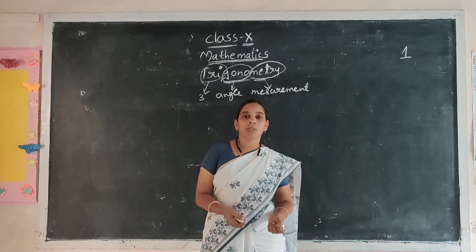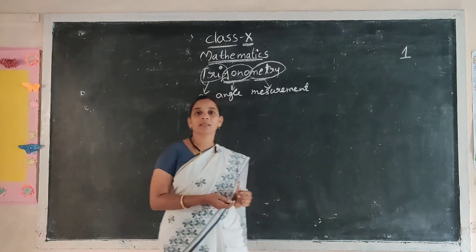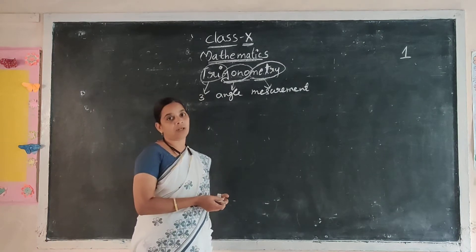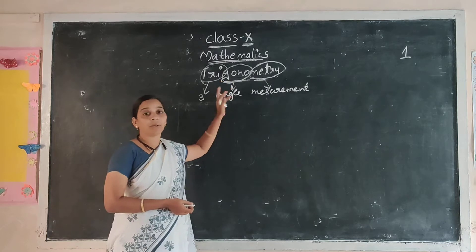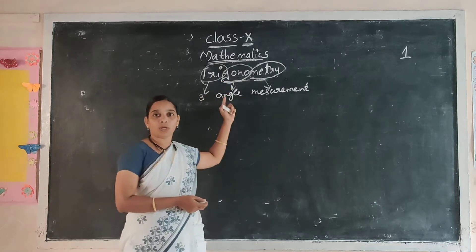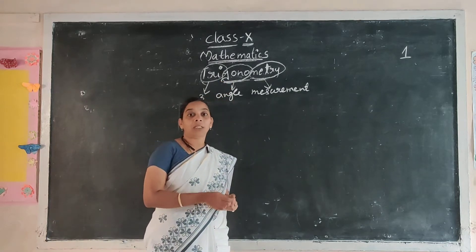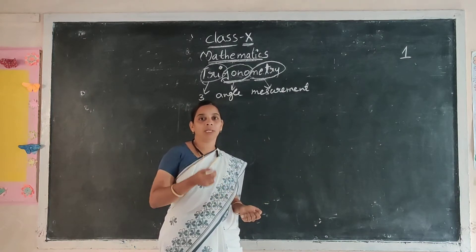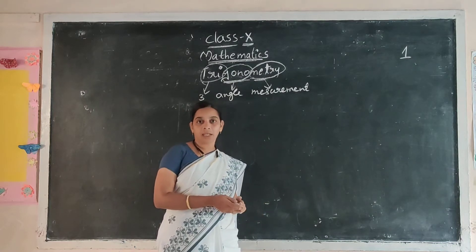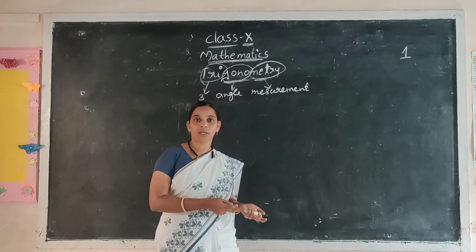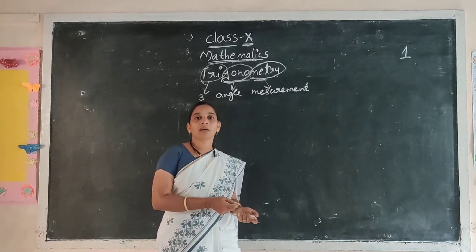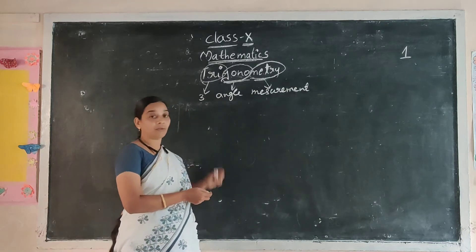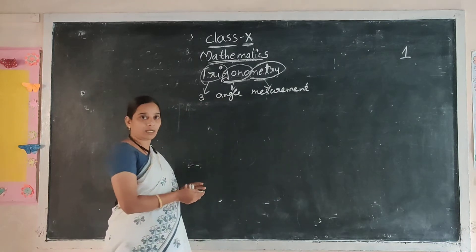Three angle measurements means — in which type of figures are three angles there? Everyone knows a triangle has three angles. So that's why in this chapter we will use only triangles. But in triangles also, so many types are there. We will take only the right angle triangle, because all triangles are based on right angle triangles only.